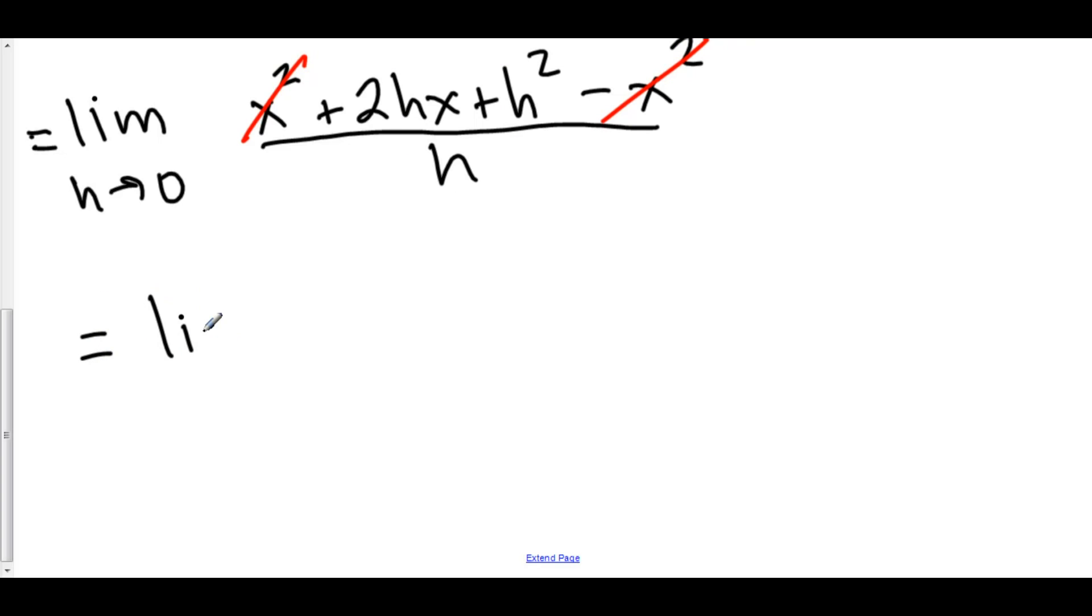Here I have the limit as h approaches 0 of h times 2x plus h all over h. And lo and behold, my h's cancel out. That means that there was a hole at h equals 0. That also means that I can now plug 0 into h.